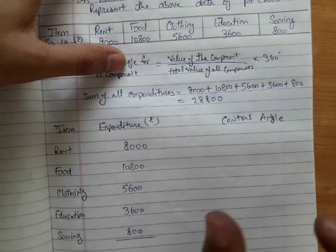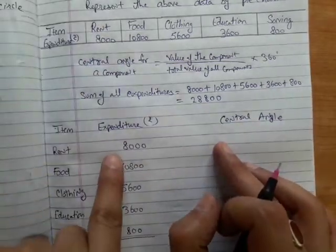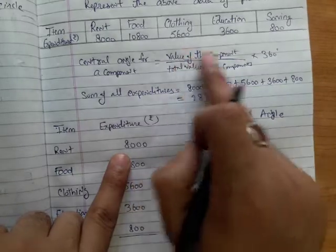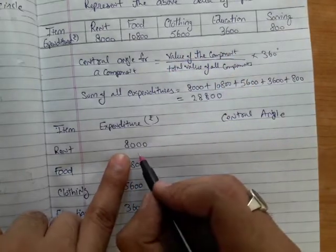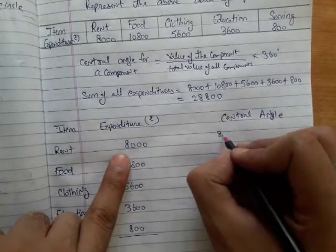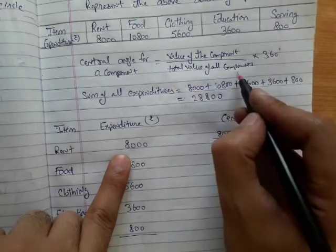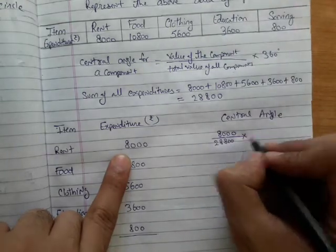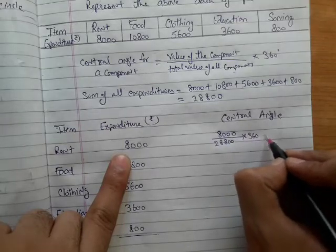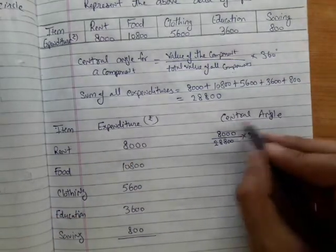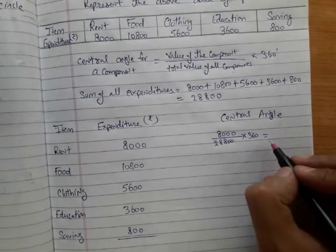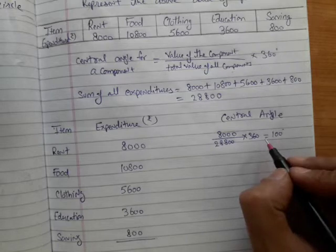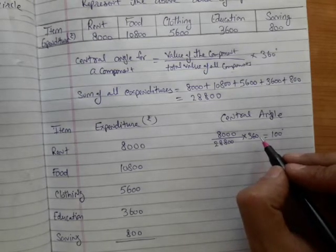We calculate the central angle for rent by putting values in the formula: 8,000 divided by 28,800, multiplied by 360 degrees. This gives 100 degrees. Next, for food: the expenditure is 10,800 divided by 28,800, multiplied by 360 degrees, which gives 135 degrees.